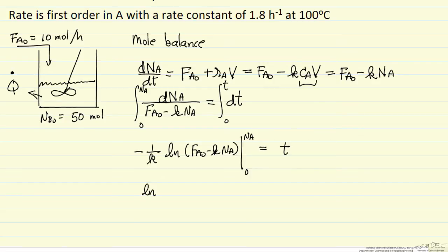So the limits, FA0 minus K in A over FA0, and that's equal to minus K times T.